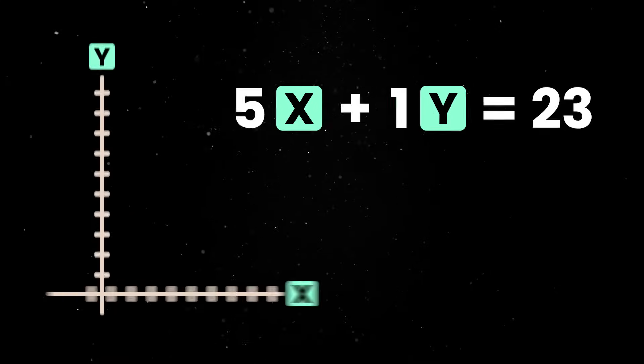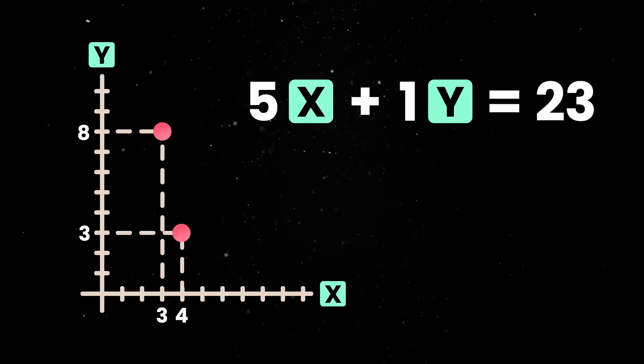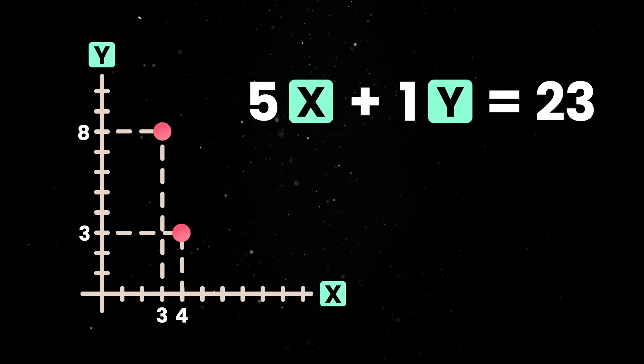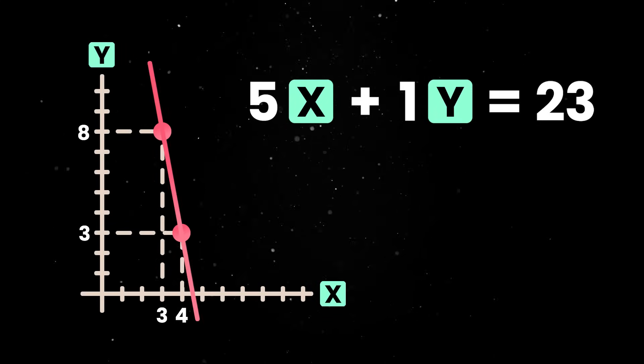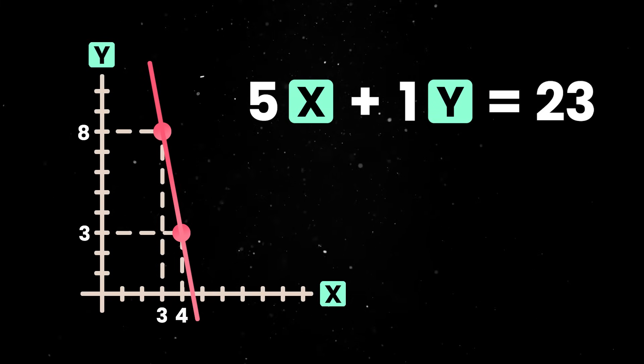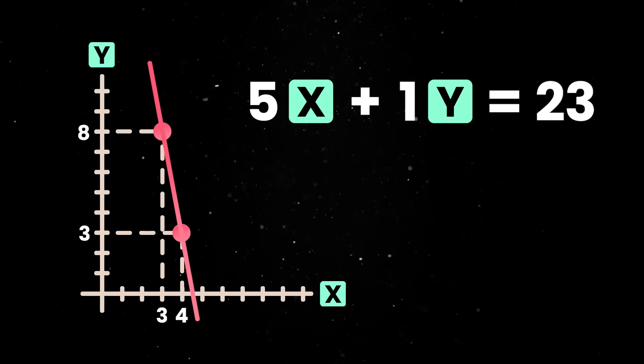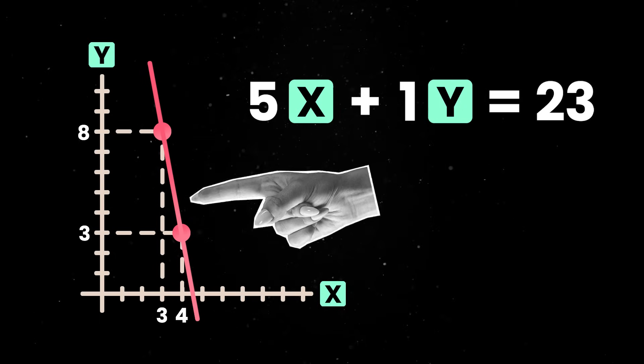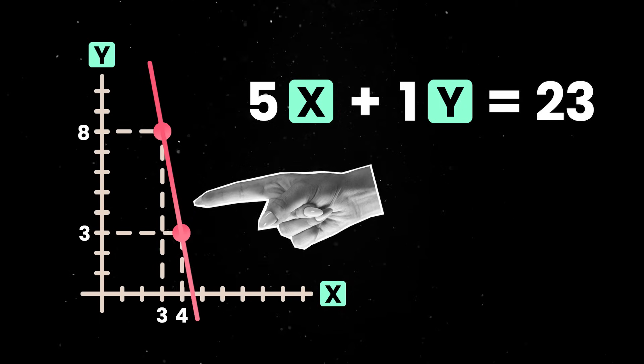We can create a plot by choosing two x and y pairs which solve the equation, and then drawing these points on an axis. Then we'll join the two points with a straight line and this is the equation visualized. Now, for any other pair of x and y we choose, we know for certain that the point will land somewhere on this line, as long as the pair satisfies the equation.